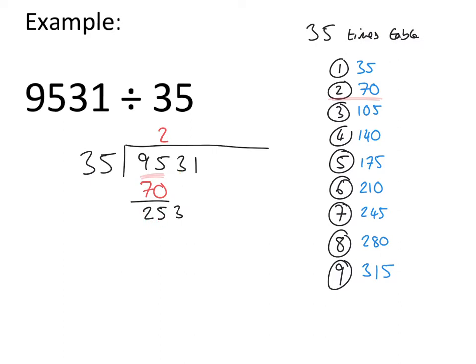We're bringing down the 3 from the top line, and we're going to go through the process again. How many 35s are there in 253? Now the first number before we get to 253 is 245. On the top line, we write the 7, and underneath 253, we write 245, and we do the subtraction, and this time it gives us 8.